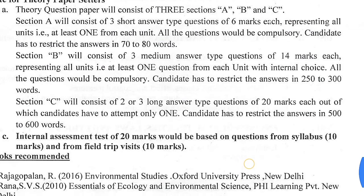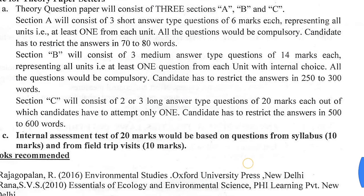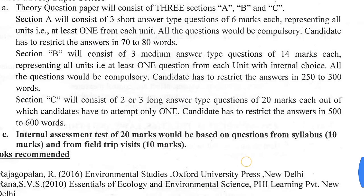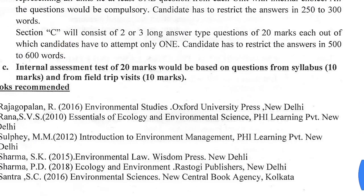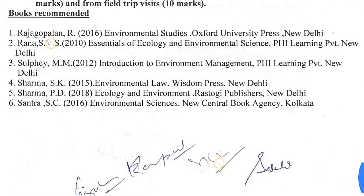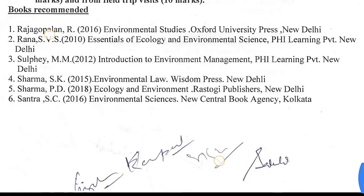Section C will consist of two to three long answer type questions of 20 marks each, out of which candidates have to attempt only one question. Candidates must restrict their answer to 500 to 600 words. Students can prepare for the examination from the recommended books.